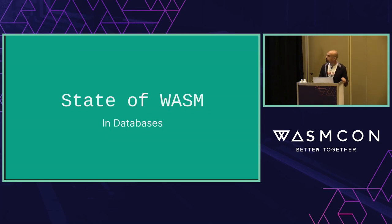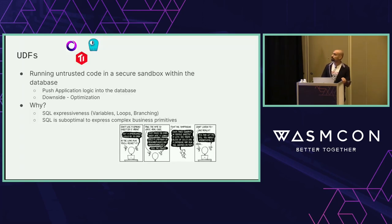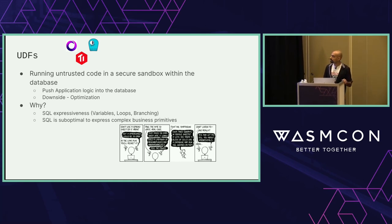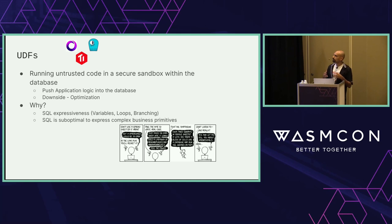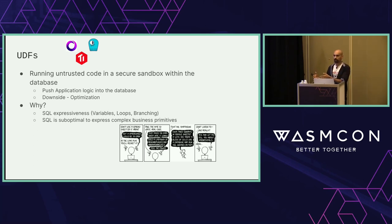The core place that Wasm is being leveraged in databases right now is UDFs — user-defined functions. There's a whole family of them, but roughly they're about developers being able to run untrusted code inside the database itself. The core idea is to push logic that's traditionally in application land into the database for better performance characteristics. The downside is that whenever you push data rather than using traditional SQL, you lose the optimizations on top of it.